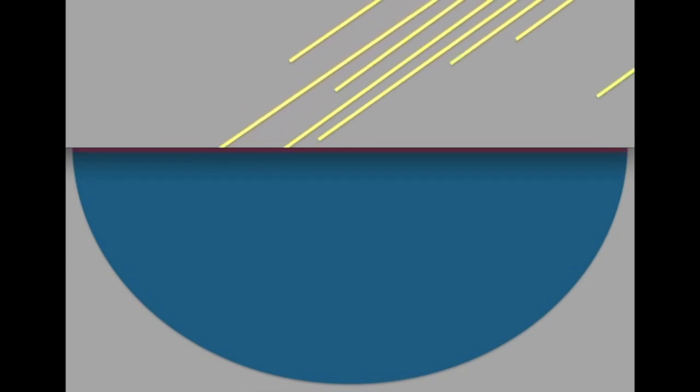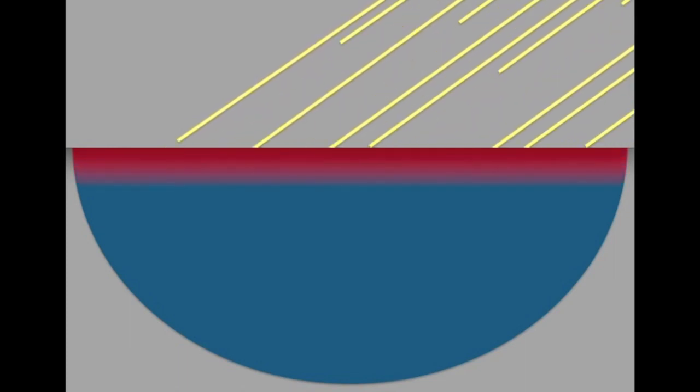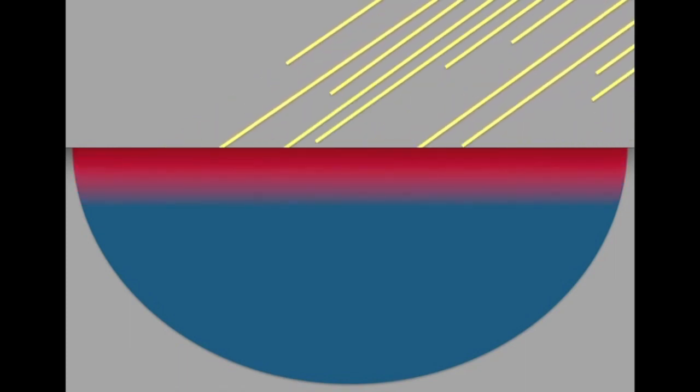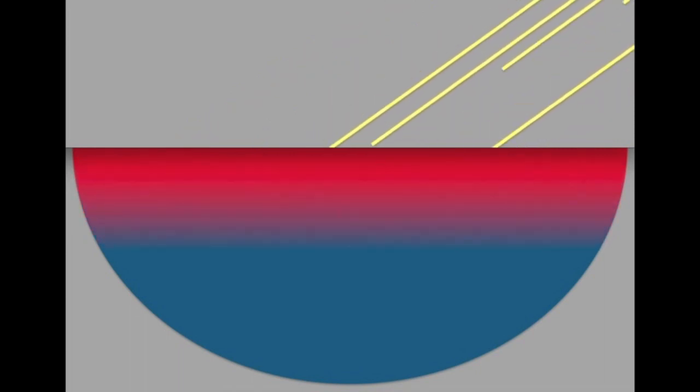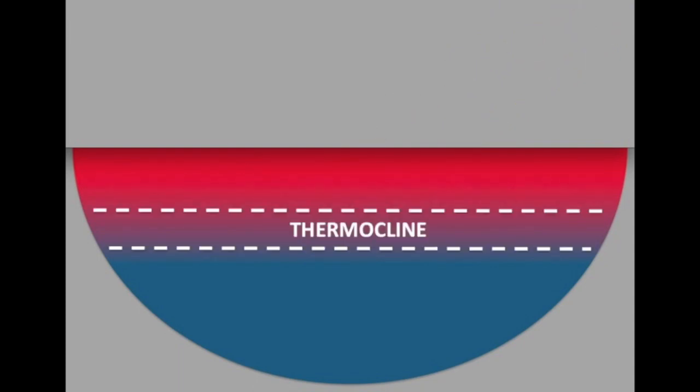As sunlight enters a lake, it warms the surface water, making it less dense and lighter. As the surface water begins to float on the cold water below, a transition zone forms where it changes from warm to cold very quickly. We call that the thermocline.